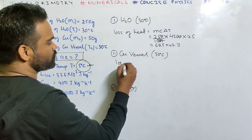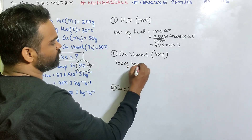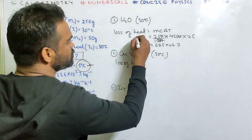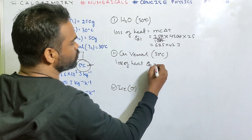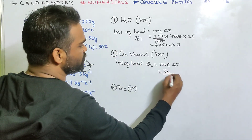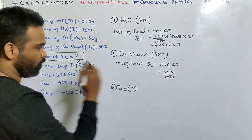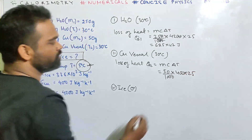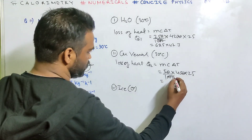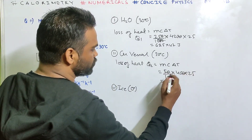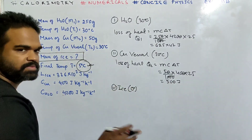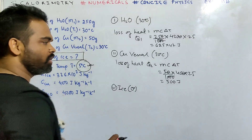Copper vessel — again, loss of heat. Be careful: the initial temperature of the copper vessel is the same as that of water, 30°C. This is Q2. MC ΔT: M is 50 grams, so 50/1000 kg. C is 400. Change in temperature is 25. That gives 50/1000 × 400 × 25 = 500 joule.